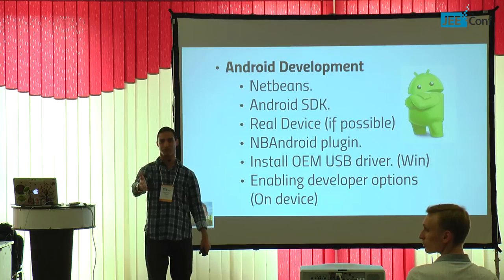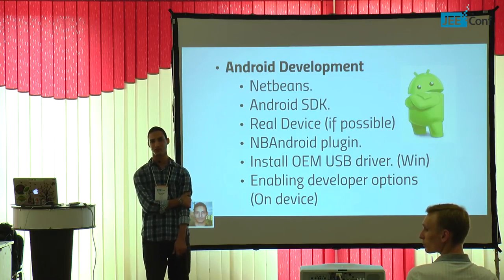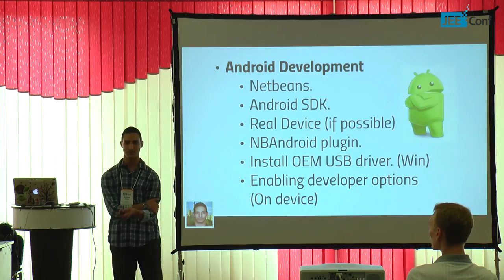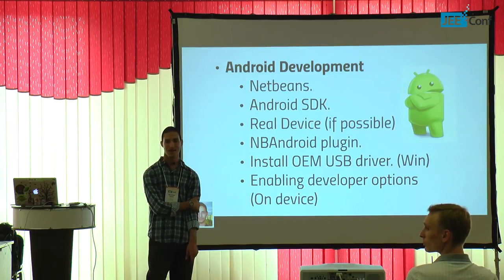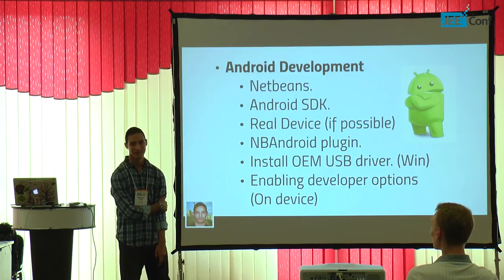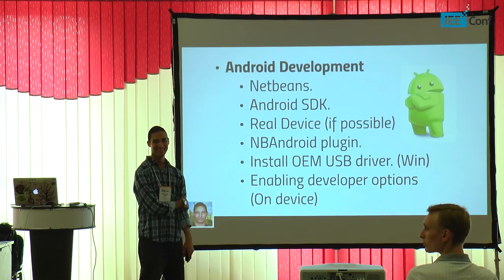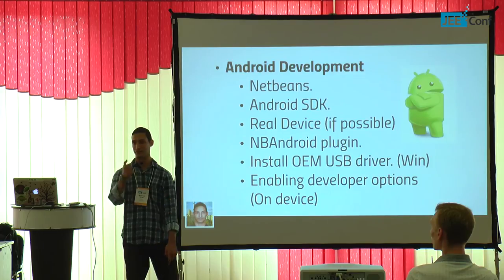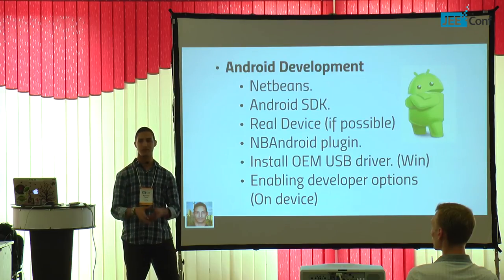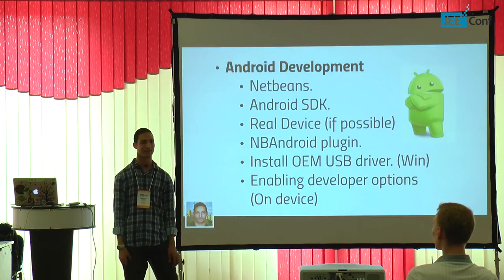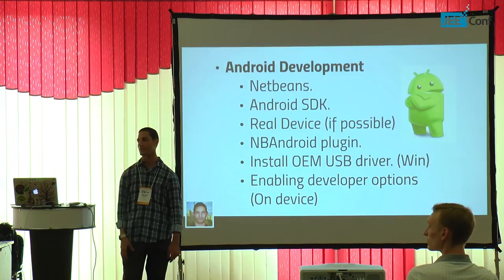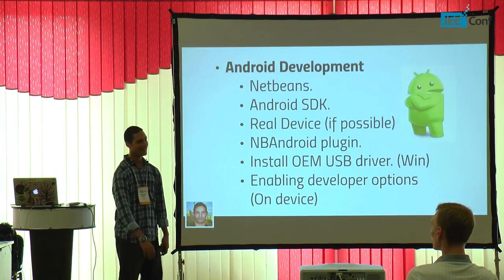On Android 4.2 and above, Developer Options is hidden. The trick: go to Settings → About → Build Number, and tap on Build Number five times. After that you'll find Developer Options enabled. This is a platform-level setting, not hardware-specific — it applies to all devices running Android 4.2 and above.